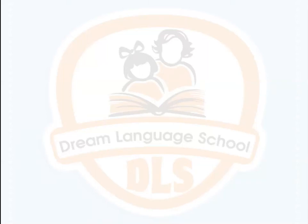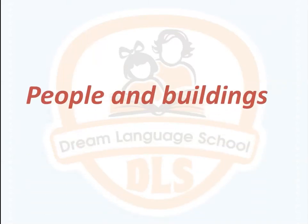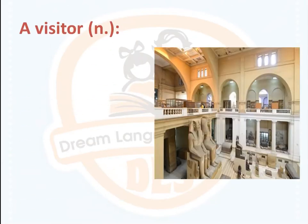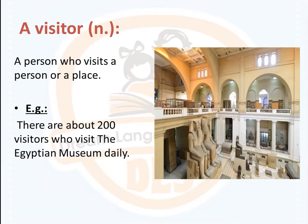Hello, today our lesson is about people and buildings. The first vocabulary word is 'visitor.' A visitor is a noun and it means a person who visits a person or a place. Example: there are about 200 visitors who visit the Egyptian Museum daily.